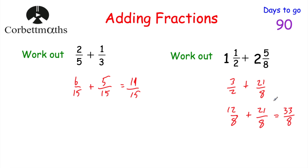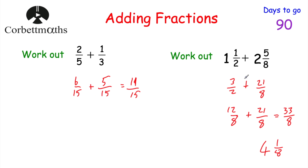Now that's the top-heavy fraction. Because the question gave us mixed numbers to begin with, I would usually change this back into a mixed number. The line in the fraction means divide, so we see how many eights go into 33. Four eights is 32, so that's going to be four, with one left over. So the answer is four and an eighth. So one and a half plus two and five eighths equals four and an eighth. Whenever you're adding fractions with different denominators, make sure they have a common denominator, then just add. For mixed numbers, convert to top-heavy first.